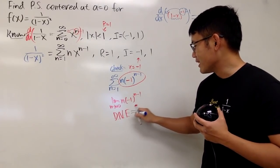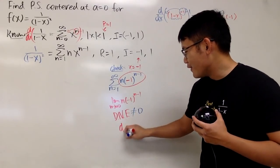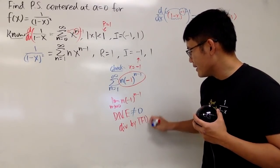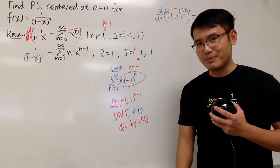Doesn't exist of course does not mean 0. Therefore, this diverges by TFD. So we still do not include the endpoints.